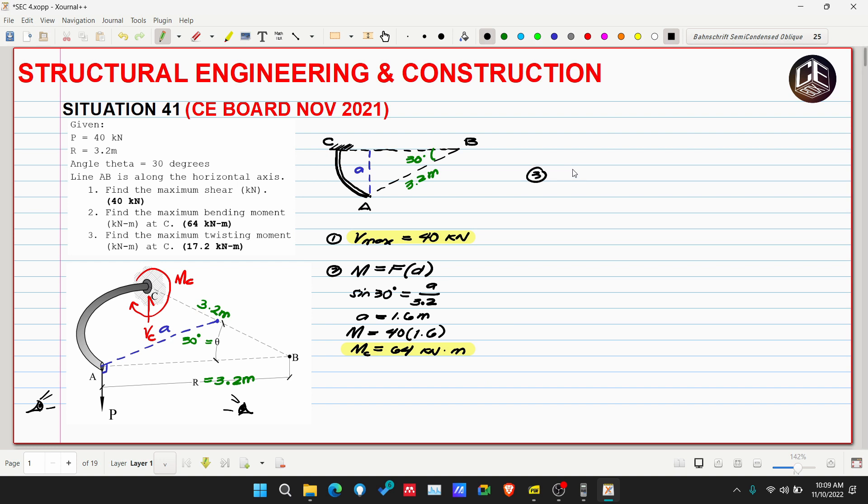Then number three: find the maximum twisting moment. As I said earlier, our twisting moment comes from this view, facing this direction. The distance we need is this. Let's call this distance b.